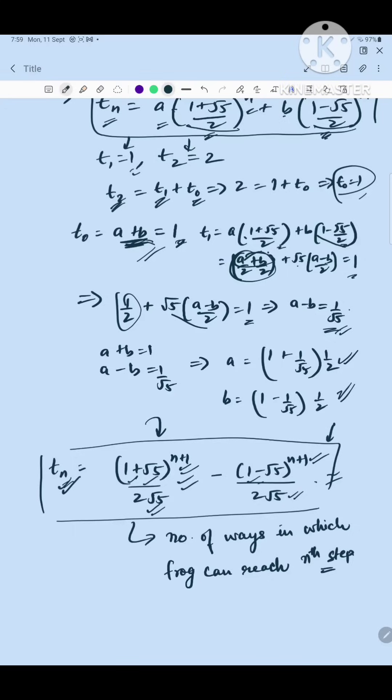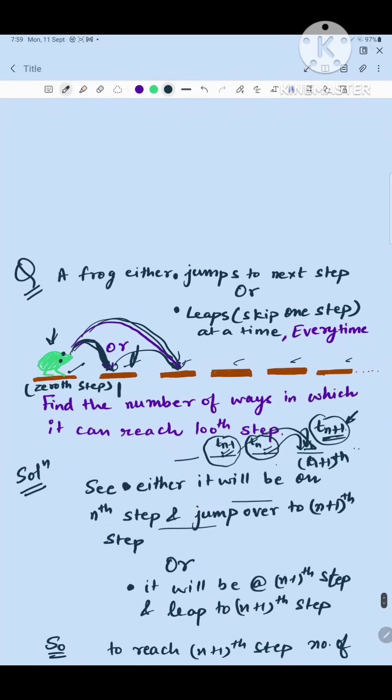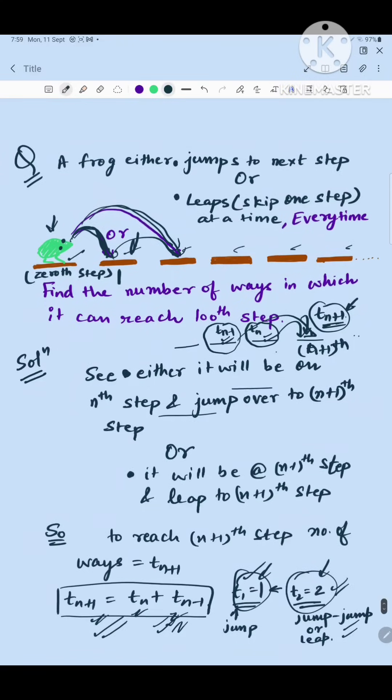These are the number of ways in which this frog can land on the 100th step. So this is a question of permutation and combination and sequential series both. And a similar question has come in IIT-JEE advance, so I will put in some other video where I will show you that question and the similarity to that question with this question. Thank you very much.